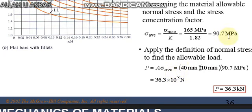We have 36.3 times 10 to the power 3 newtons, which means 36.3 kilonewtons.